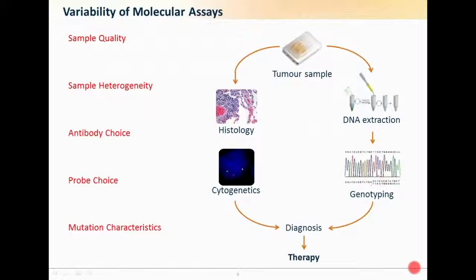When you go through the workflow, there's a simple schematic where you have the tumor sample, which may go to histology, cytogenetics analysis, or genotyping, and then diagnosis. At every single step, there's the opportunity for variability to creep in. You've got sample quality, sample heterogeneity — whether the boundary of the tumor shows the same characteristics as the center. Does it vary throughout the tumor when looking at IHC or FISH slides? The antibody used for IHC will make a big impact on sensitivity and scoring.